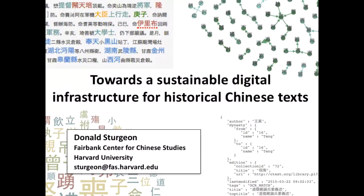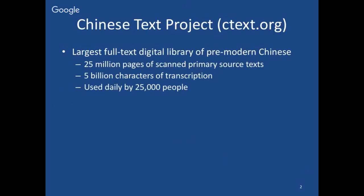I'm not going to try and give a comprehensive introduction to it, but instead I'm going to talk about some aspects of it which you can think of as some first steps towards building a type of infrastructure for handling certain issues with pre-modern Chinese texts. The Chinese Text Project is now the largest full-text digital library of pre-modern Chinese. It has 25 million pages of scanned primary source materials, 5 billion characters of transcription, and it's used daily by over 25,000 people.